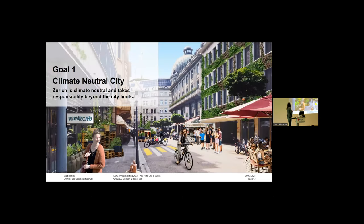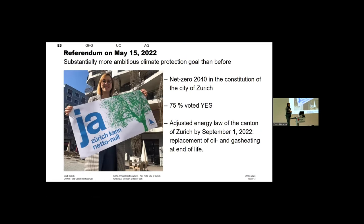Goal number one, which might be the most interesting from your perspective, is about the climate neutral city. What is Zurich doing to become climate neutral? Switzerland has a very direct political life. There are referenda by the public asking for certain things to be done. Probably hard to imagine for other countries, but actually in 2022, 75% of the Zurich citizens voted yes to a net zero plan by 2040. It's now in the constitution of the city of Zurich.